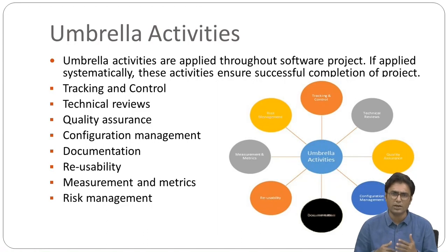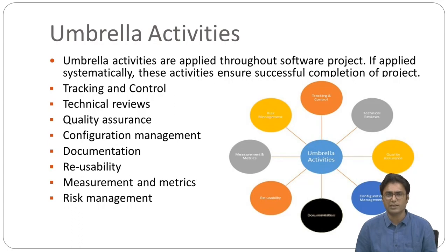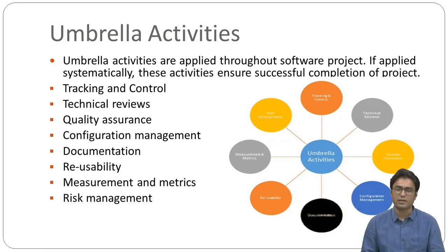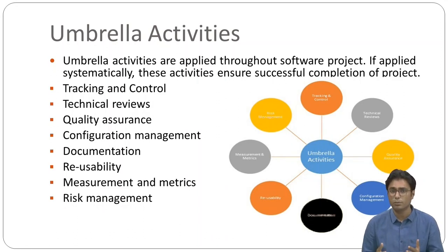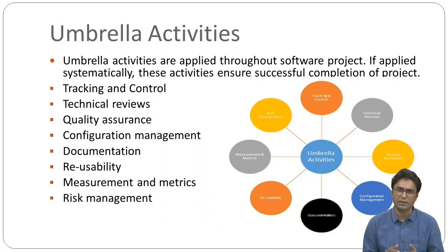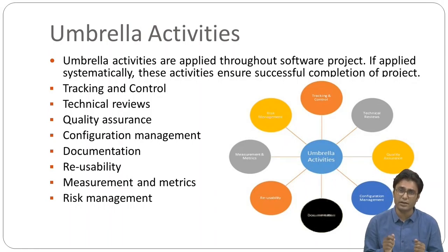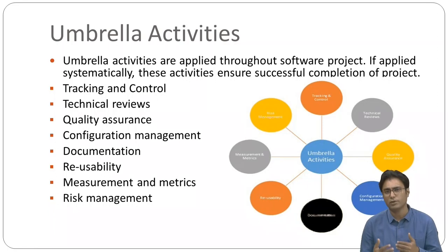Measurement and metrics: software can be measured directly or indirectly. Direct measures include lines of code and cost. Indirect measures include quality and functionality. This activity defines how software can be measured and using which metrics, and also helps develop new metrics for developers. Risk management: a risk is an event that may or may not occur. Many risks are associated with any project. This activity assesses whether risks may occur and, if they do, how they will affect the project.